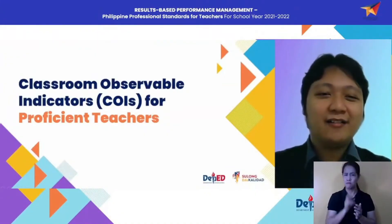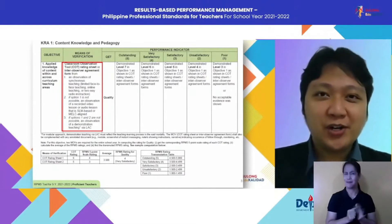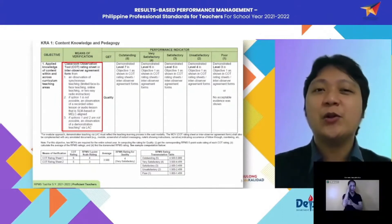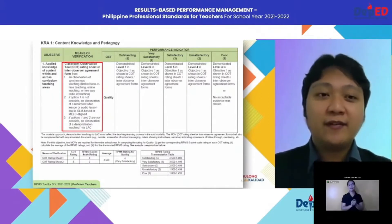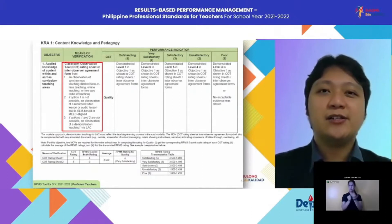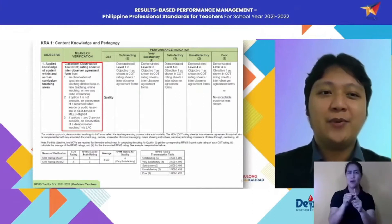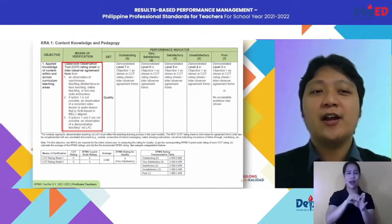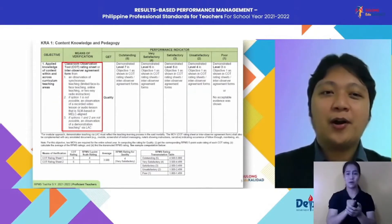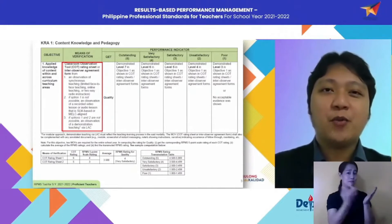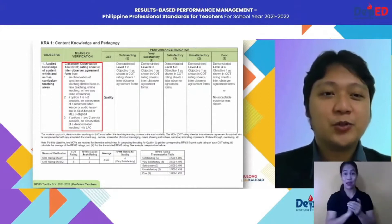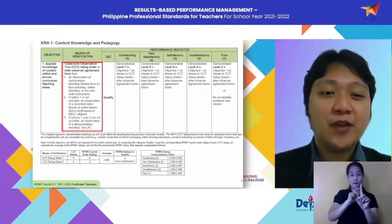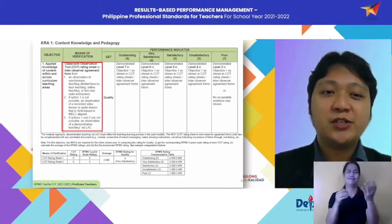Are you ready? Let's proceed. Our first objective in the RPMS tool is Applied Knowledge of Content Within and Across Curriculum Teaching Areas. This objective has been with us for several years since we integrated PPST to the RPMS. The means of verification here is through classroom observation. The MOV is the Classroom Observable Tool Rating Sheet or Inter-Observer Agreement form from: number one, an observation of synchronous teaching — whether from limited face-to-face, online teaching, or two-way radio instructions.